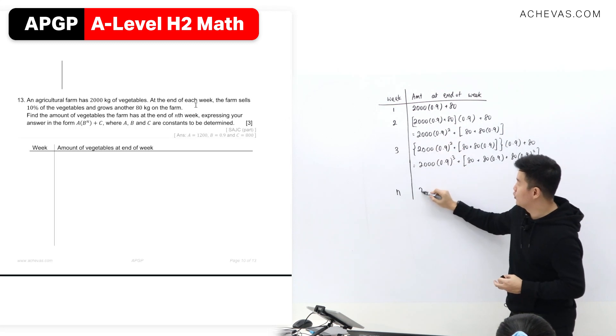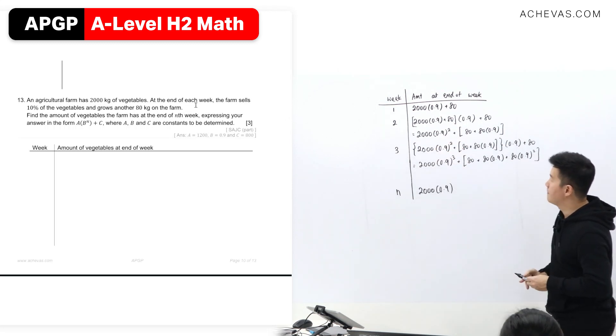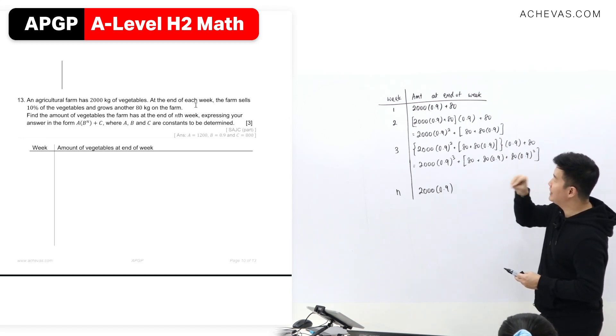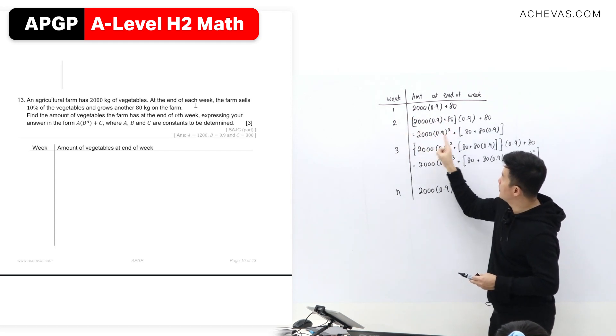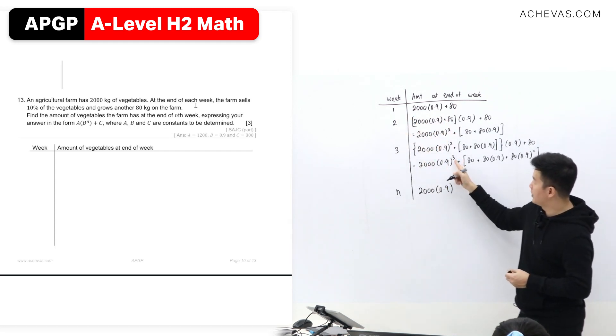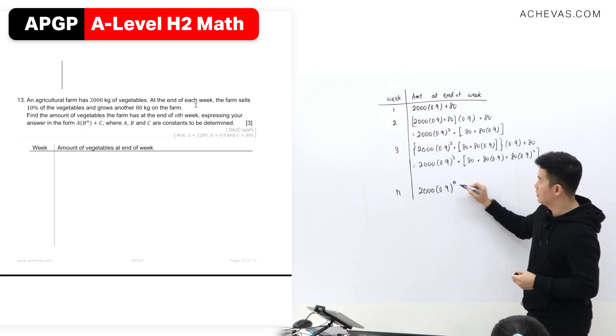What that is consistent from row to row will be this 0.9. What that is changing from row to row, I will put in that extra effort to read it. To the power of 1, 1. To the power of 2, 2. To the power of 3, 3. So here it should be to the power of n.